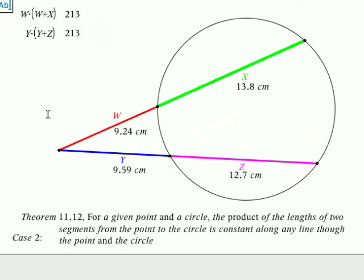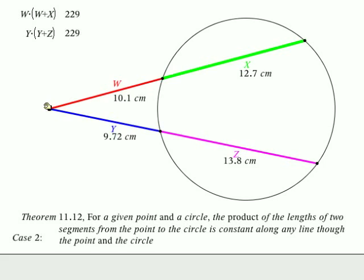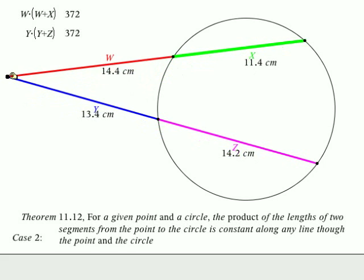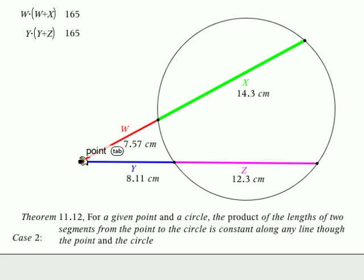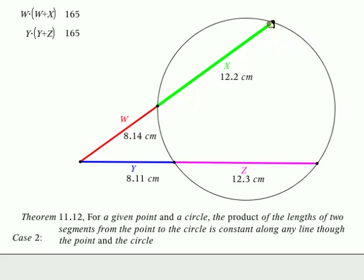So instead of using point names I thought I'd name the segments to make things a little bit more understandable. W, the red segment, multiplied by the quantity W plus X is going to be equal to Y times the quantity Y plus Z. Watch this - as the quantities change they continue to equal each other. It doesn't matter where we move them.